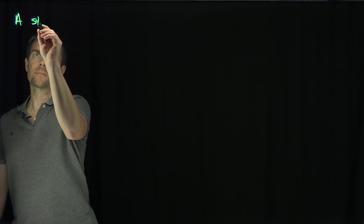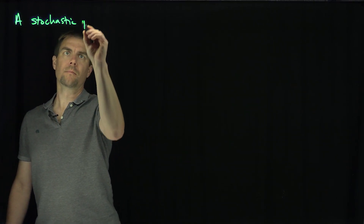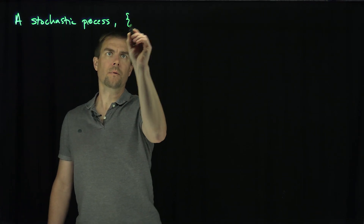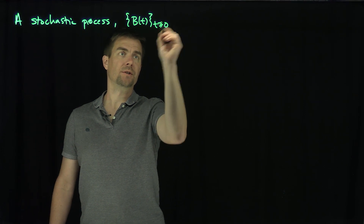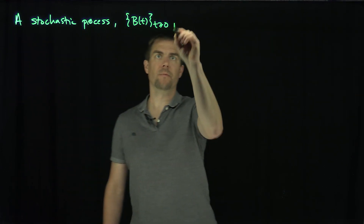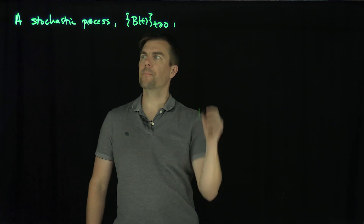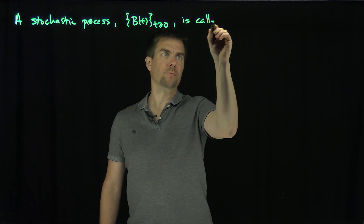Hello, students. In this video, we'll discuss the mathematical definition of Brownian motion. A stochastic process b of t, where t is on the half line, so it's a continuum of random variables — a continuous stochastic process. We think of t here as time. This is called standard Brownian motion.